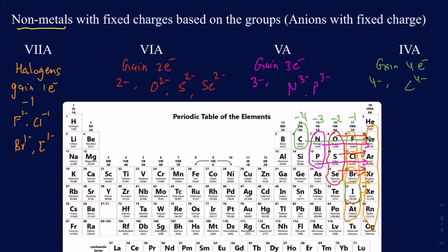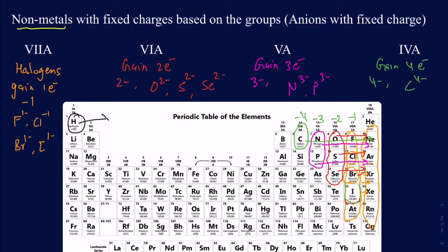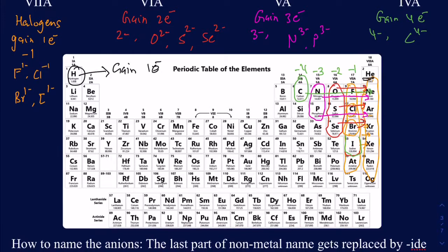There is one more non-metal we didn't talk about — hydrogen. Hydrogen is only one electron away from the closest noble gas, which is helium. So it gains one electron and makes a charge of 1−. Hydrogen⁻ is called the hydride ion.